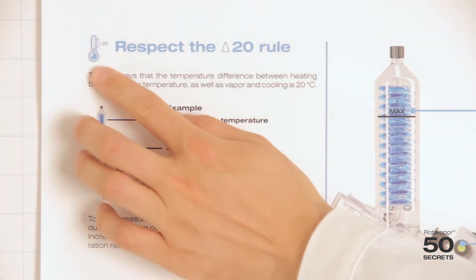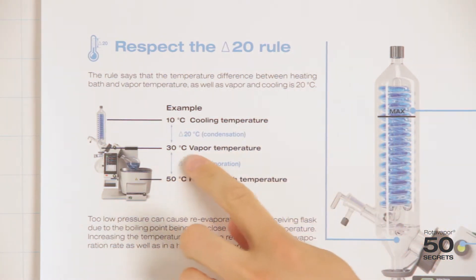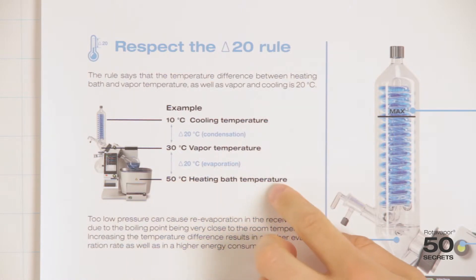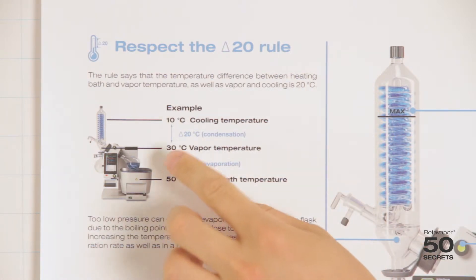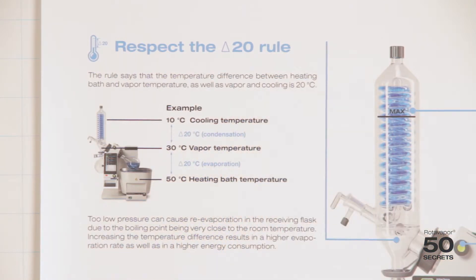The first secret talks about respecting the Delta 20 rule. The Delta 20 rule says that the temperature difference between the vapor temperature and the heating bath temperature, as well as the difference between the vapor temperature and the cooling temperature, should always be 20 degrees.